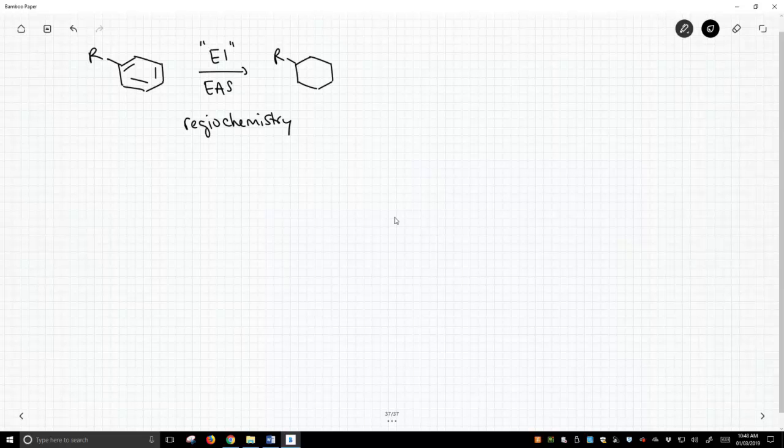As it turns out, there are three possibilities. It can go right next to the R group, and this is referred to as the ortho product. It can go one carbon over, and that's referred to as the meta product. And it can go all the way across the ring from the pre-existing R group, and that is referred to as the para product.